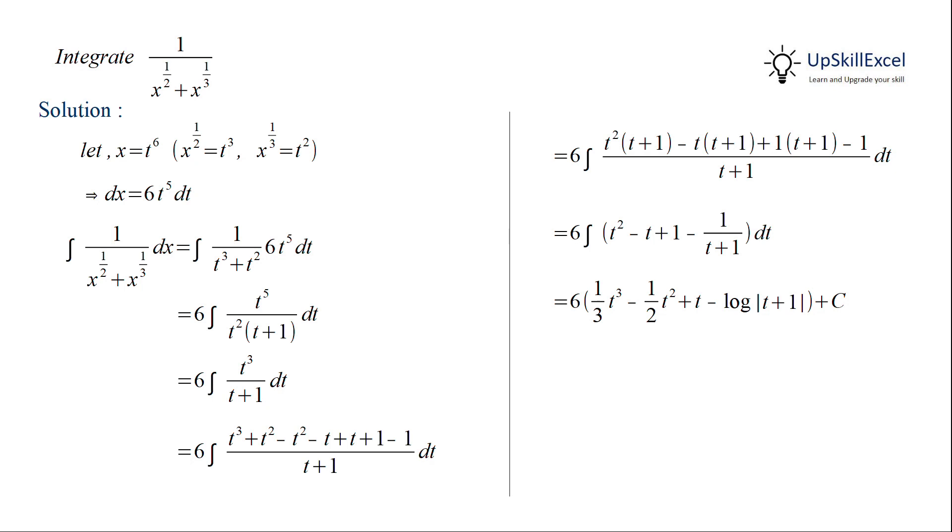Doing the multiplication with 6 gives us 2t cubed minus 3t squared plus 6t minus 6 log of absolute value of t plus 1.